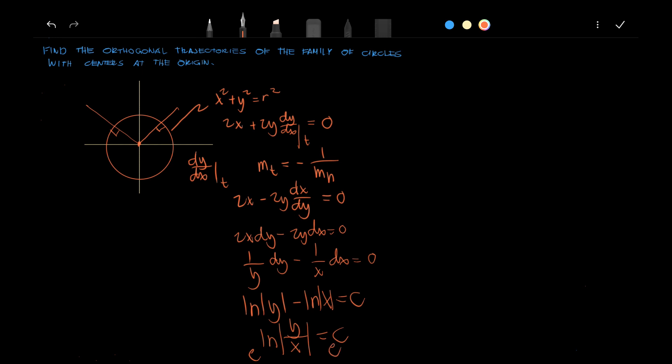We have y over x equals exponential of c, and this is another constant. Let's define that c1 equals e to the c. And simplify: we have y equals c1 x.